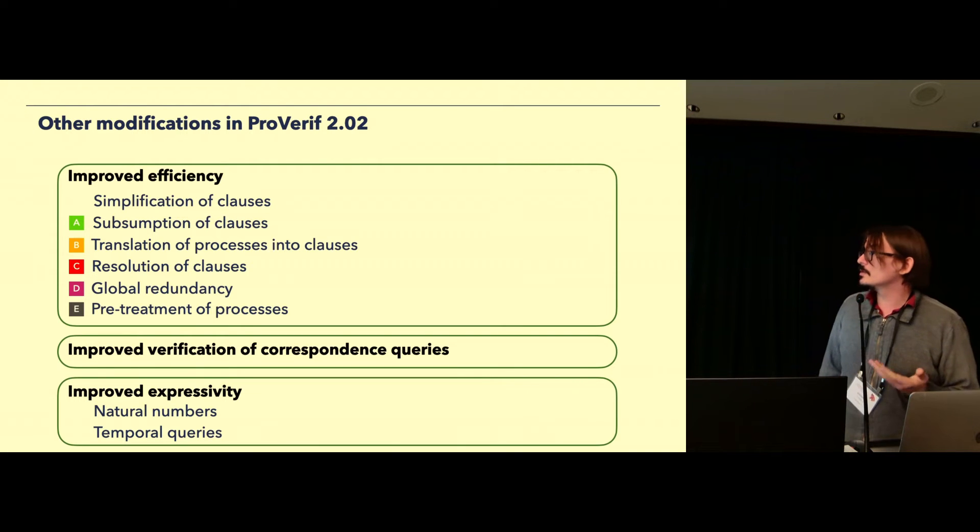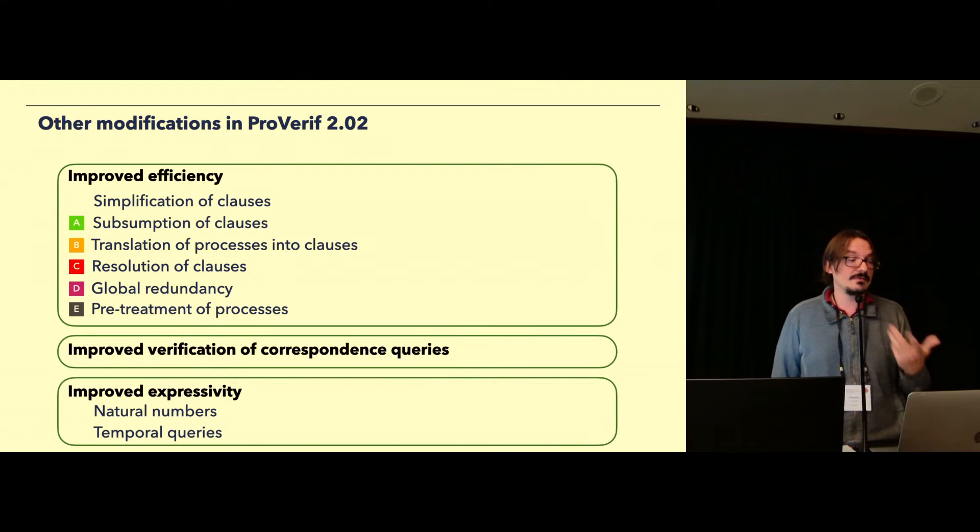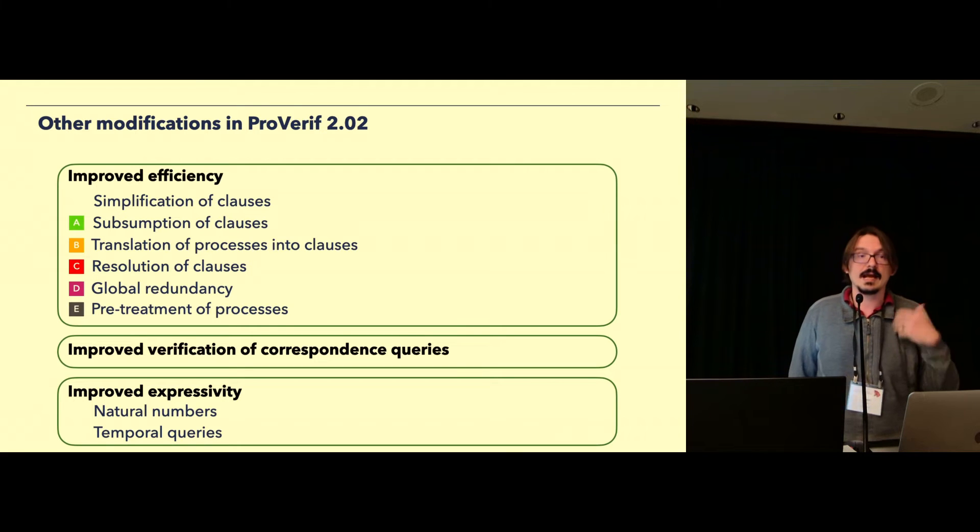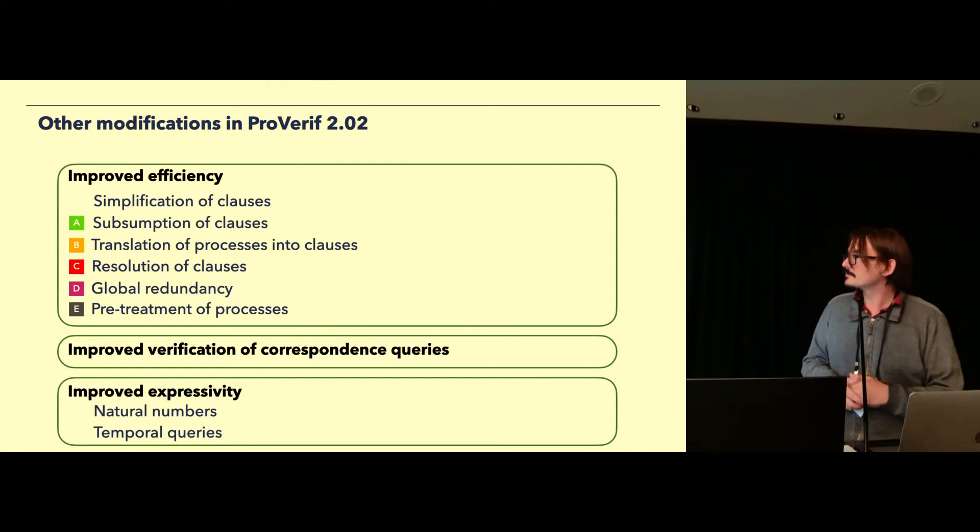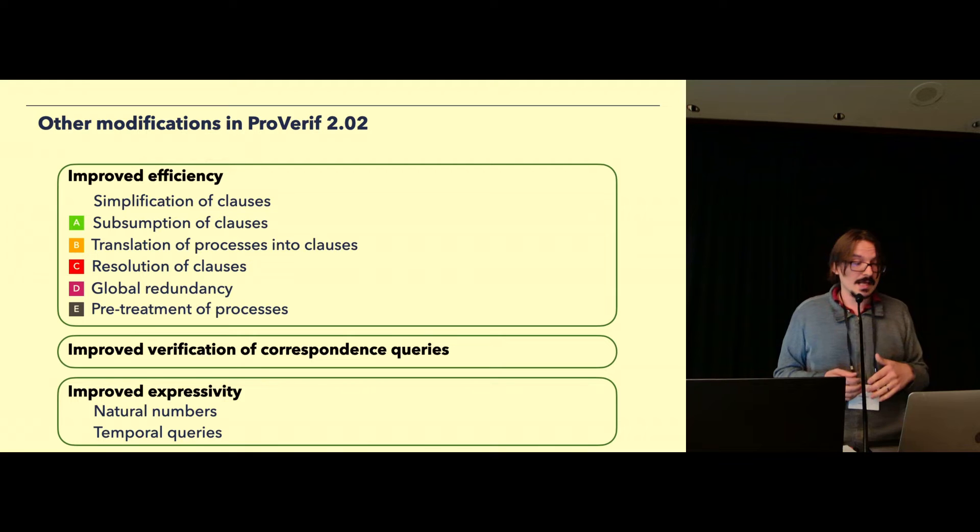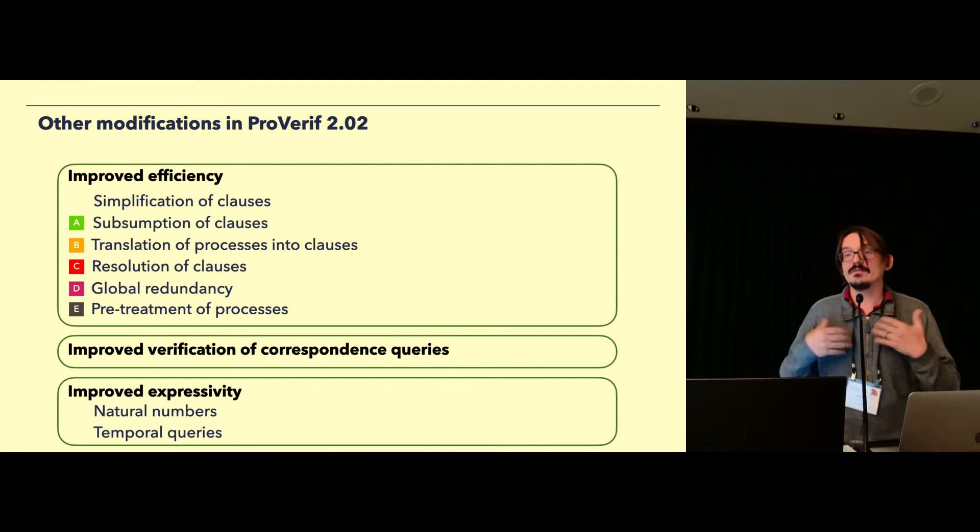But we also improved the expressivity of ProVerif by first adding natural numbers, so you can actually now use natural numbers and do operations like plus and subtraction. That is very useful to describe, for example, counters that are used quite often in stateful protocols. Of course, we don't allow everything about natural numbers, so you're not allowed to do multiplication or division, but still. We also added temporal queries and improved the way ProVerif verifies them to further reduce the number of false attacks.